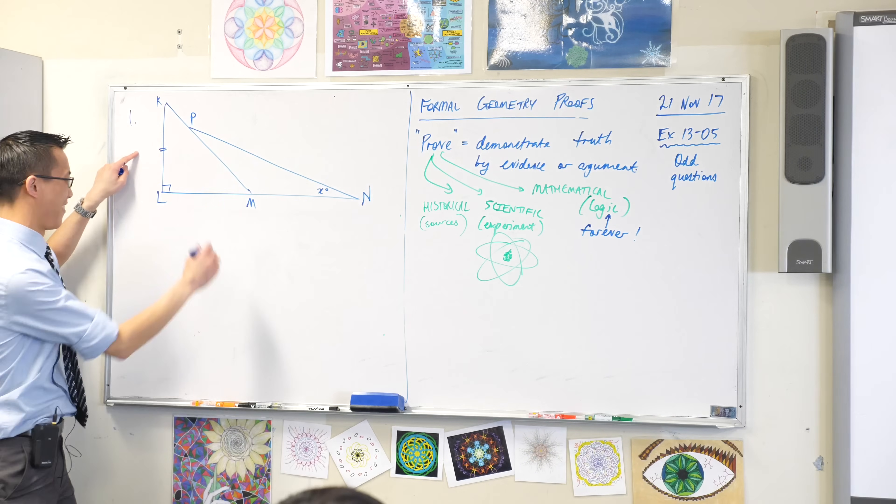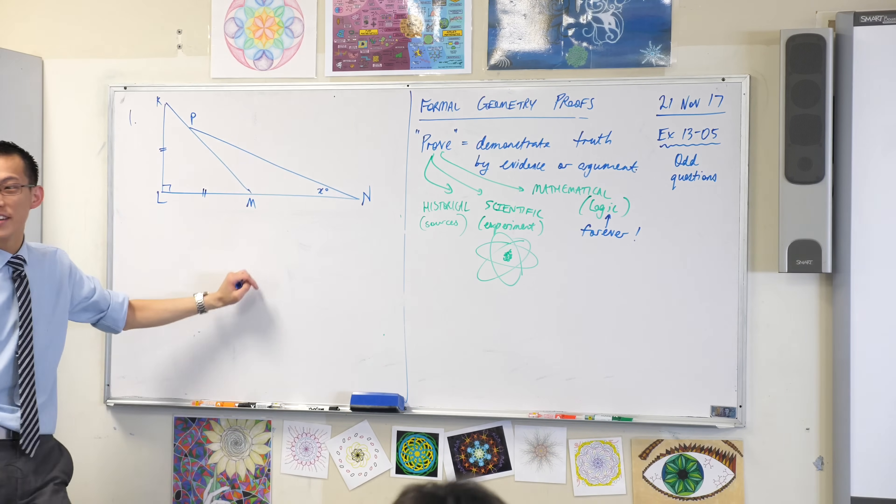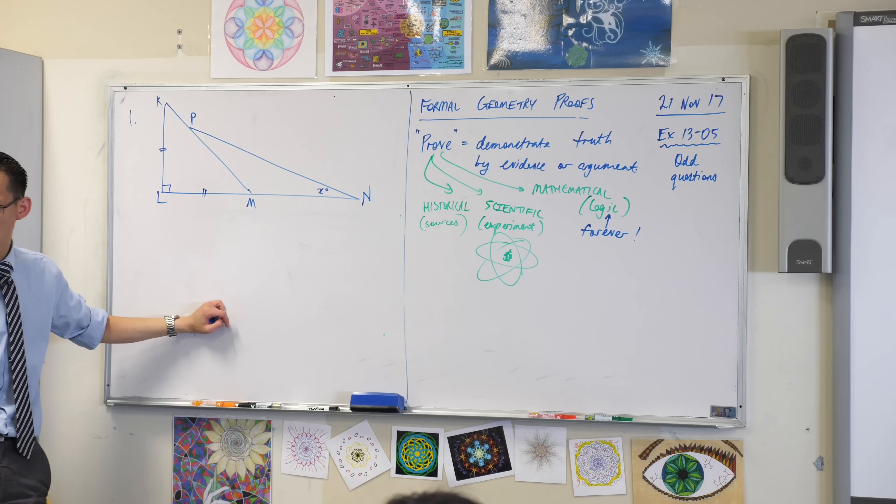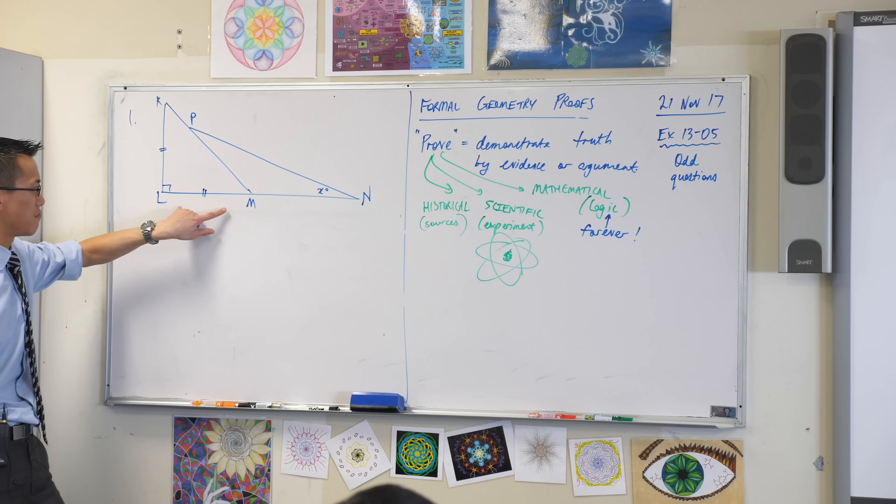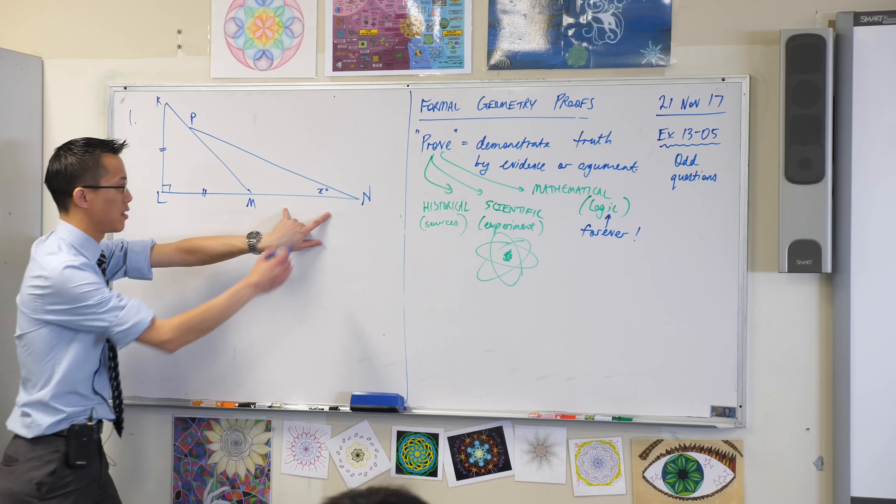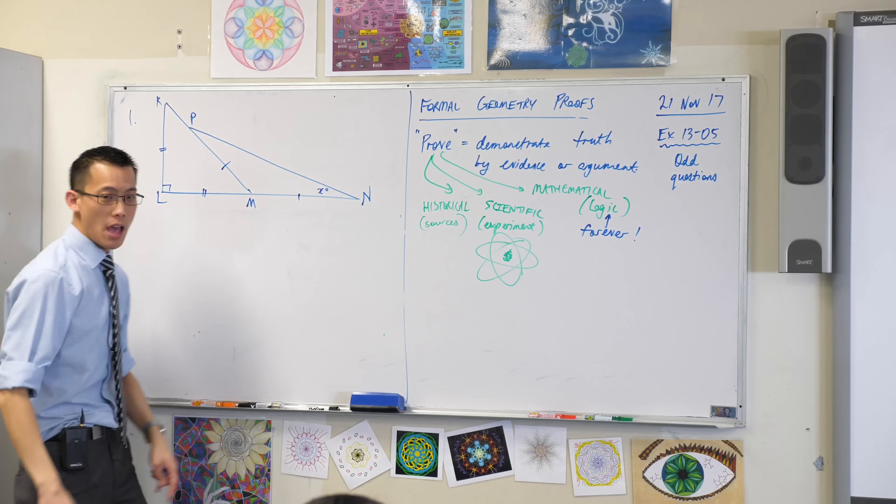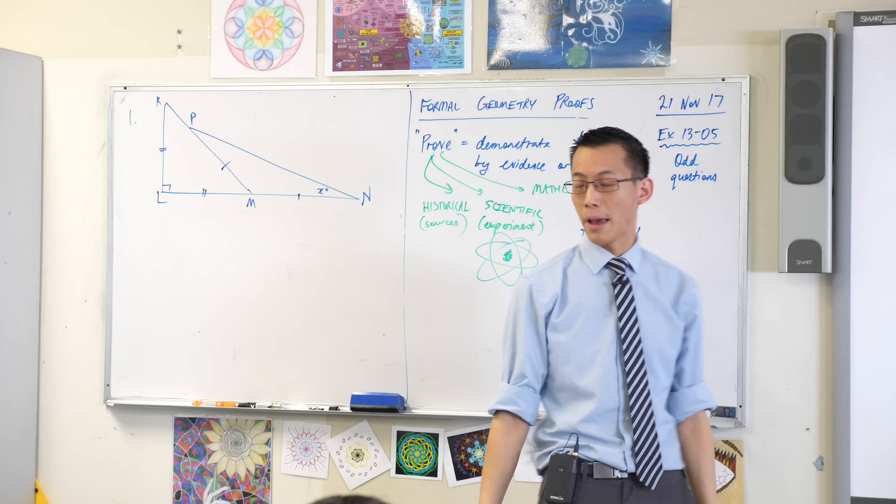So KL equals ML. They give us another pair of lengths that are also equal. Which are they? LMN, it's this guy over here, and MP. Is that right? Yeah. Okay, good. Have I got all the information? Yes. Okay.